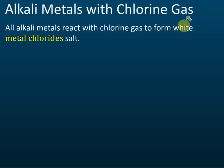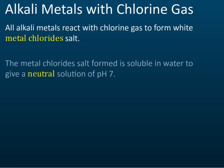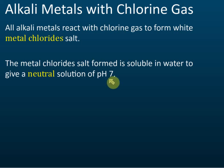Alkaline metals react with chlorine gas to form white metal chloride. Whether it's lithium, sodium, or potassium, the chloride is white in color. When dissolved in water, it produces a solution with pH 7 — neutral. This is unlike the oxide: metal oxides of group one such as lithium oxide, sodium oxide, and potassium oxide produce alkali when dissolved in water.